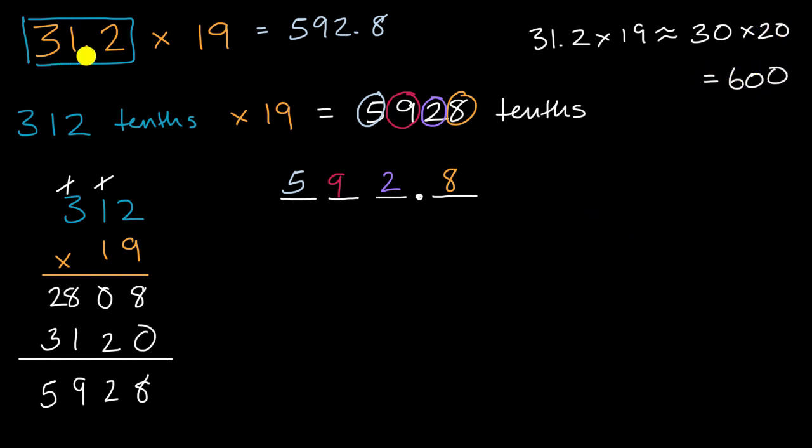So that tells me that my product here should be roughly equal to 600. And so where would I put the decimal here for it to be roughly equal to 600? So I know the answer has the digits five, nine, two, eight. Where do I put a decimal for it to be roughly equal to 600? Well, if I were to put the decimal there, that's not roughly equal to 600. If I were to put the decimal there, that's not roughly equal to 600, that's close to 60. If I put the decimal there, that's close to six.